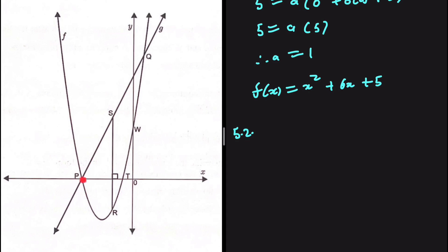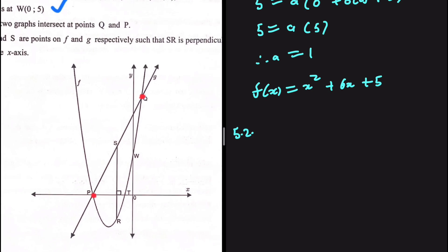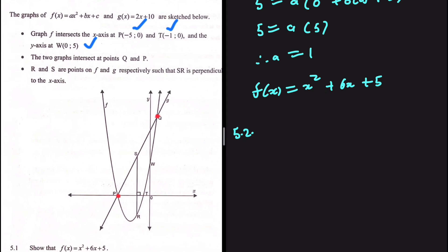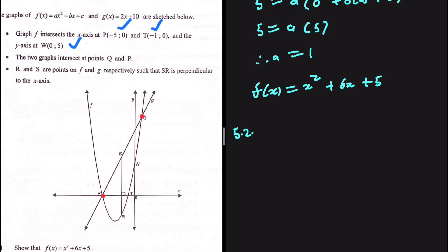At point p, our two functions f of x and g of x intersect. The same is true at q — the two functions intersect. To find q, we equate the two functions: f of x equals g of x. This allows us to find the x-values of both p and q. We already know x at p is minus 5, so we just need to find the x-value of q.